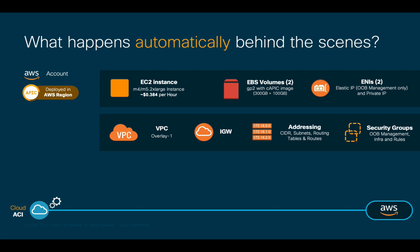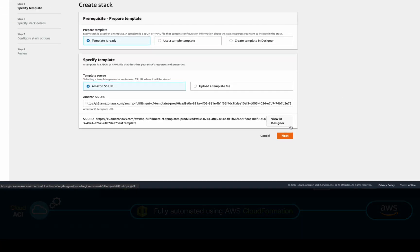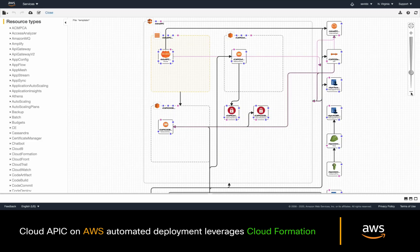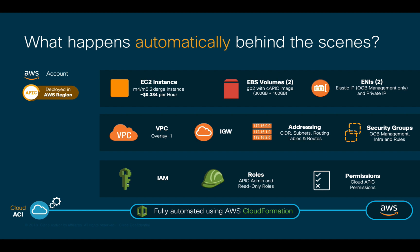Other things automatically created as part of the initial deployment process include IAM roles and permissions, so that Cloud APIC can execute configuration changes on behalf of this account. All this was fully automated by Cloud ACI, leveraging AWS CloudFormation. If you're curious about all the things that got automated, you can click on the View In Designer button before deploying Cloud APIC, where you can see all the different cloud-native services being automatically deployed for you. There are other services that get automatically configured, such as S3 buckets for log and file storage purposes, as well as SQS and Cloud Tracer. If you need to access your Cloud APIC instance via SSH, you will need to use the key pair you defined in the deployment settings, so make sure you keep the private key somewhere safe.